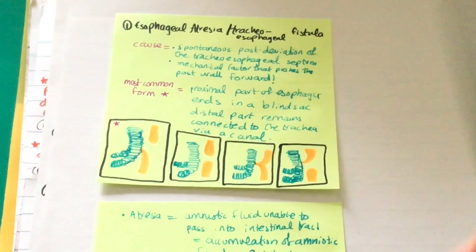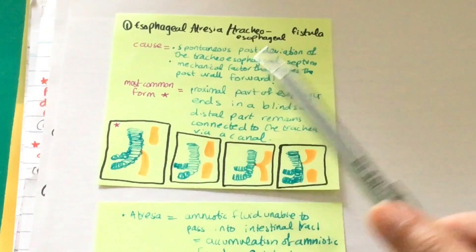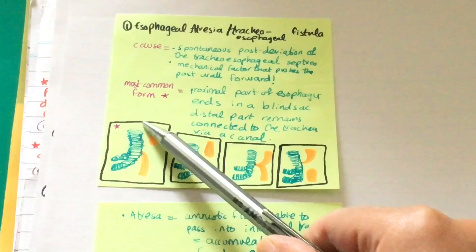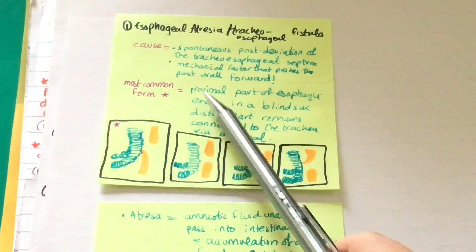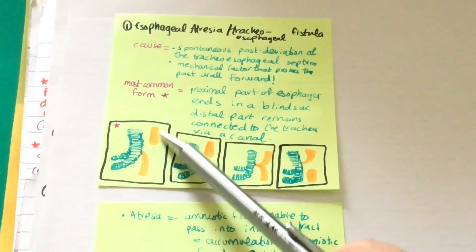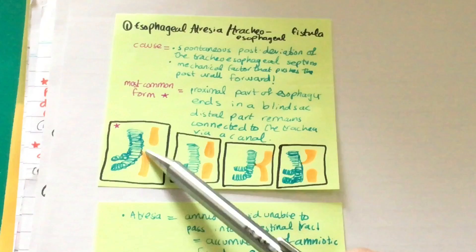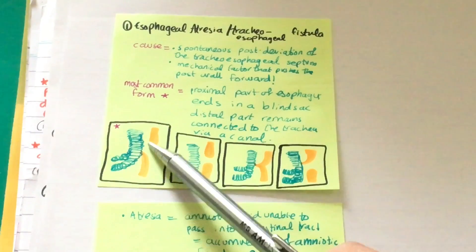The most common form, which I have marked with a star, is where the proximal portion of the esophagus ends in a blind sac and the distal portion remains connected to the trachea via a canal.